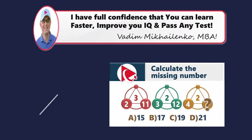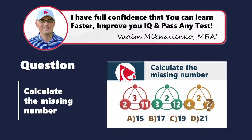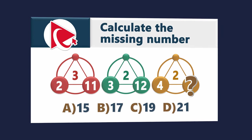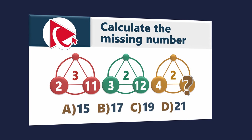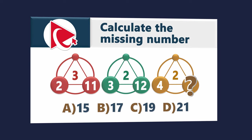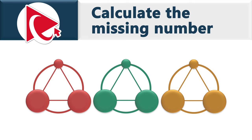Buckle up, because you are about to embark on a cerebral adventure — a rollercoaster of cognition that you need to solve on your own. You are presented with unusually-looking shapes that are mixtures of circles and triangles. Each shape has numbers. The first shape has numbers 3, 2, and 11.